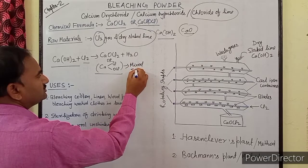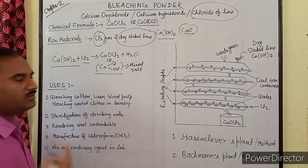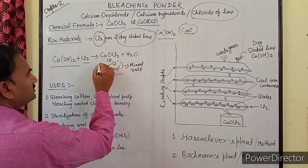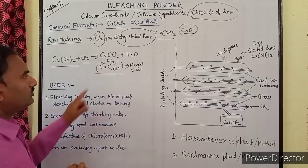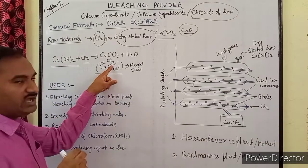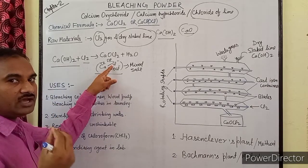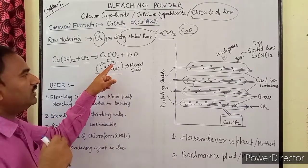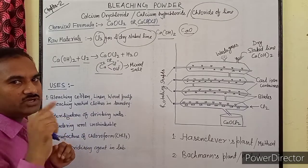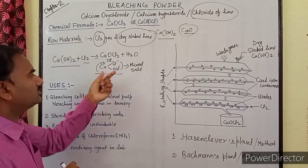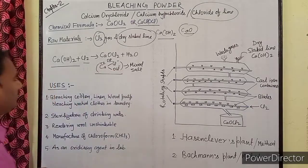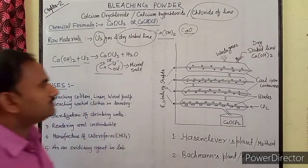यह mixed salt है क्योंकि इसमें Cl⁻ और OCl⁻ दोनों anion हैं। जिस salt में कम से कम 2 cation या 2 anion हों जो hydrogen ion या OH⁻ के अलावा हों, उसे हम mixed salt कहते हैं। तो यह mixed salt भी है।